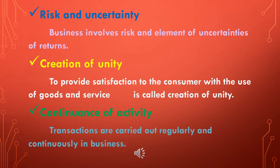The fourth characteristic is creation of utility. Providing satisfaction to the consumer through the use of goods and services is called creation of utility. Utility takes place in three ways: form, place, and time. When raw materials are converted into finished consumer goods, creation of form utility takes place — the product changes from one form to another. When goods are carried from the place of production to the place of consumption, creation of place utility takes place.